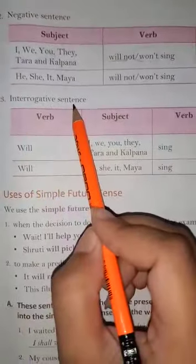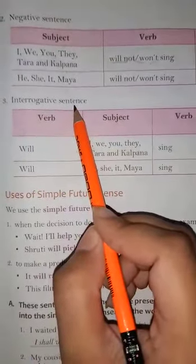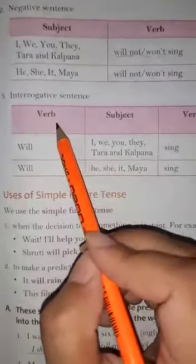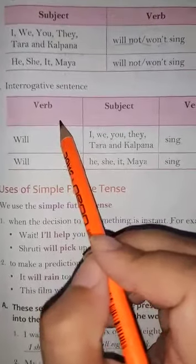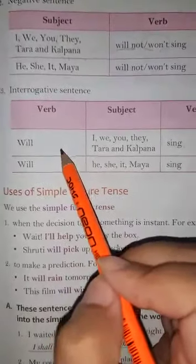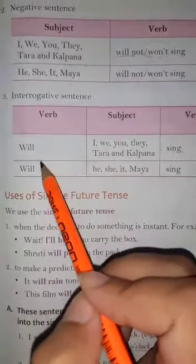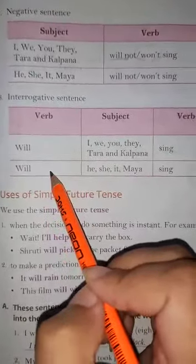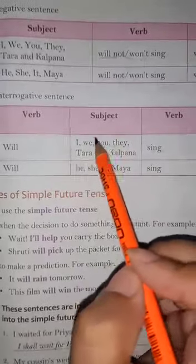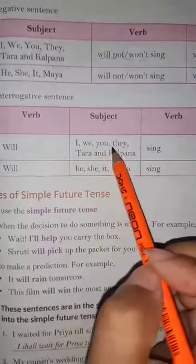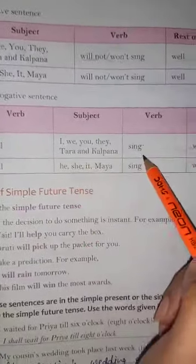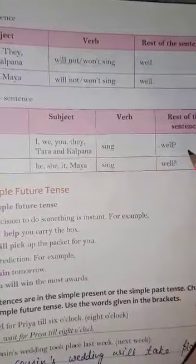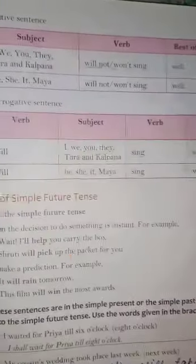Now interrogative sentences — when we are writing or asking a question. We start the sentence with 'will', then the subject: I, we, you, they, Tara and Kalpana, followed by the first form of verb and the rest of the sentence, ending with a question mark.